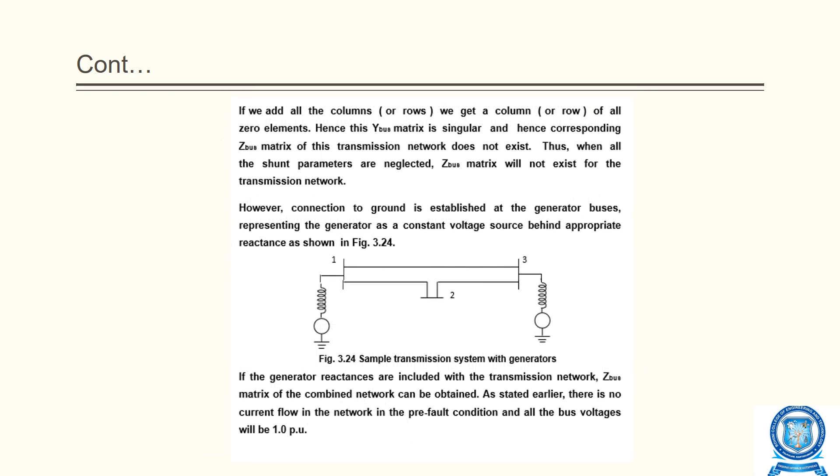If we add all the columns, we get a column of all zero elements. Hence this Y-bus matrix is singular and the corresponding Z-bus matrix of the transmission network does not exist. Thus, when all shunt parameters are neglected, Z-bus matrix will not exist for the transmission network.